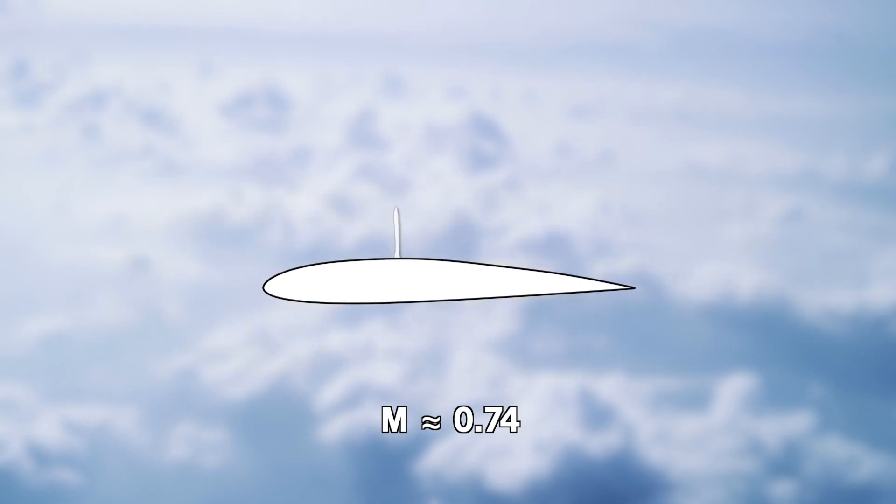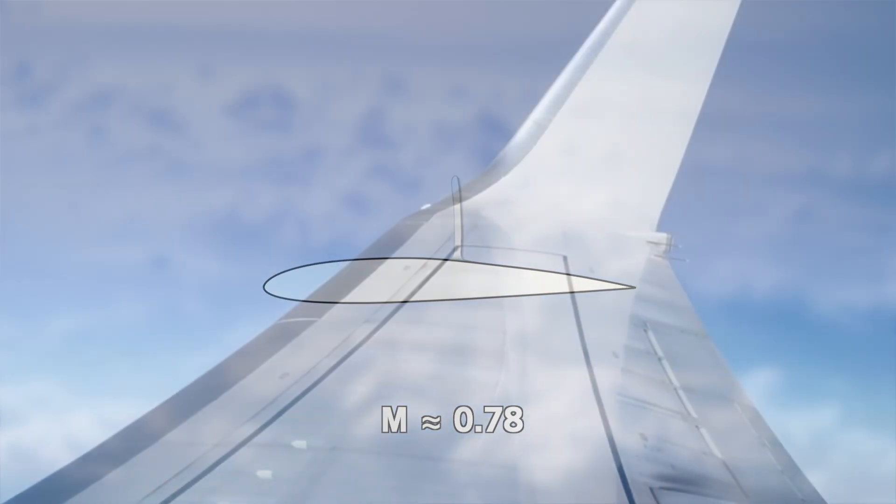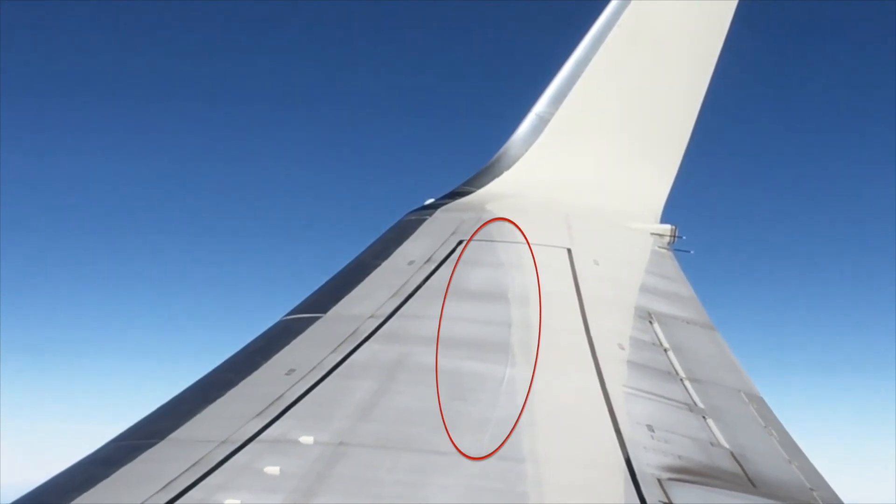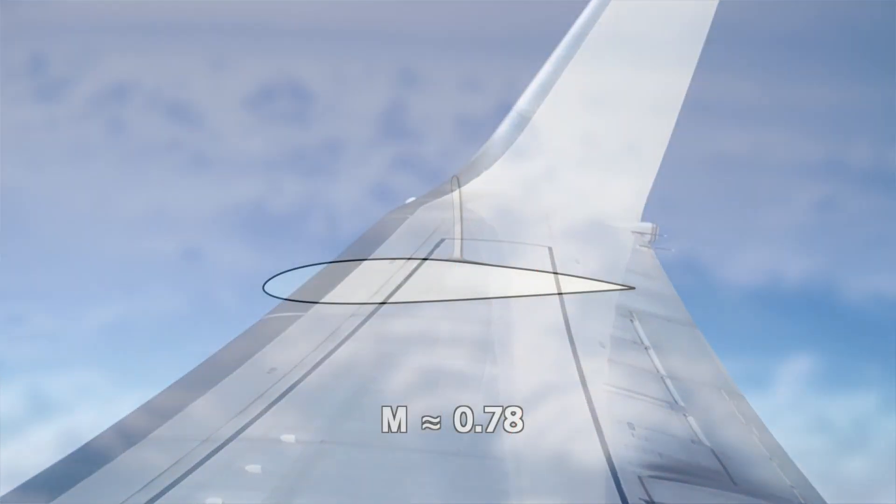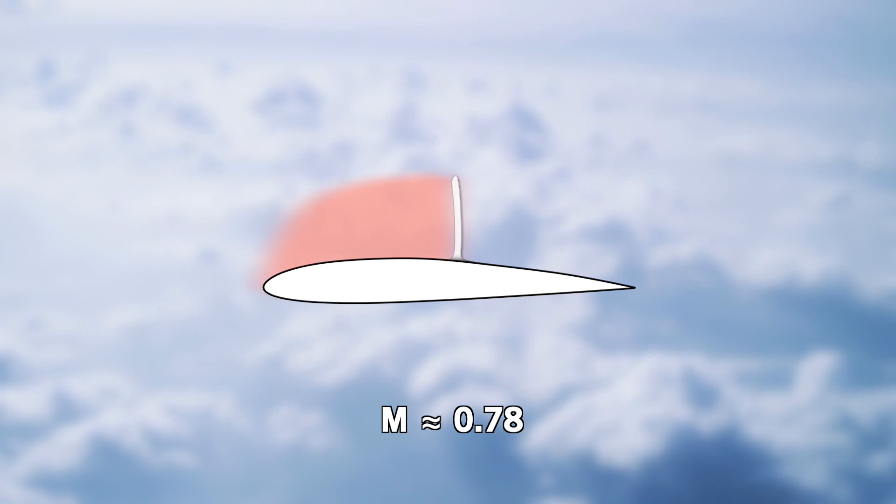Once we exceed the critical Mach, a shockwave appears on the upper surface of the airfoil, which can sometimes even be seen from inside a plane. The flow ahead of the shockwave is supersonic, and all other areas are subsonic.